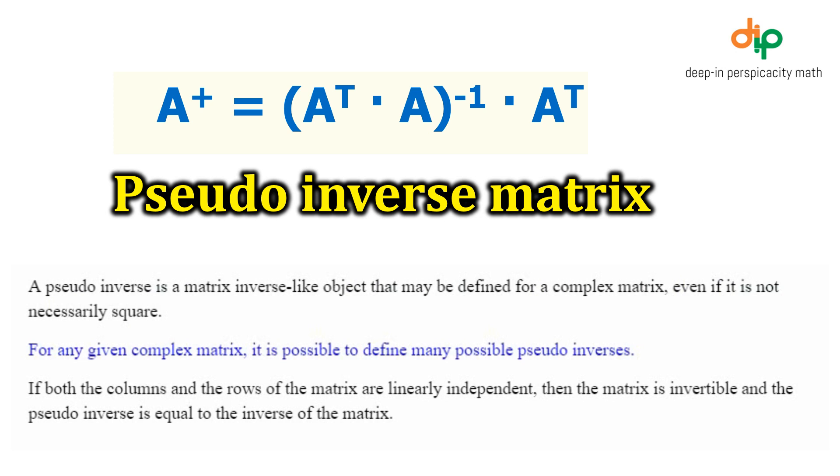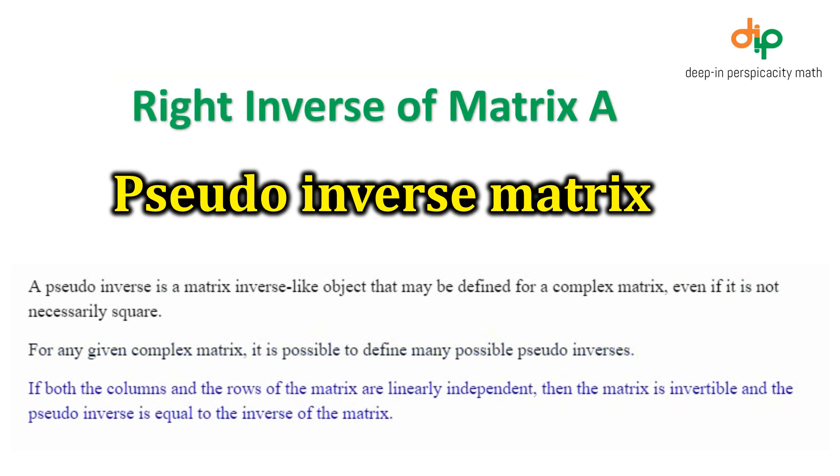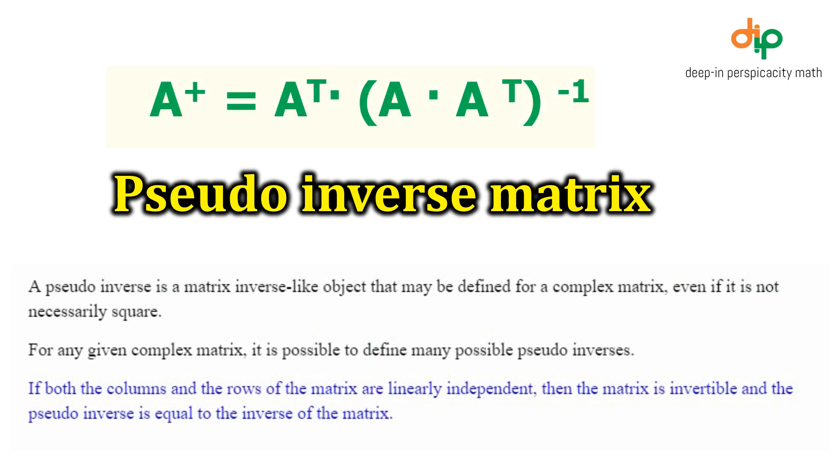For any given complex matrix, it is possible to define many possible pseudoinverses. If both the columns and the rows of the matrix are linearly independent, then the matrix is invertible and the pseudoinverse is equal to the inverse of the matrix.